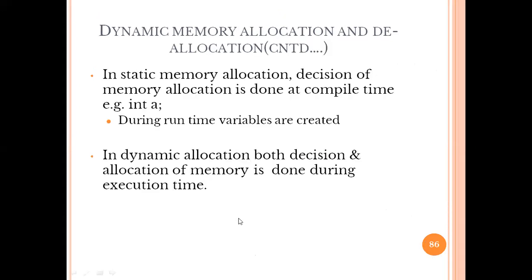In static memory allocation, the decision of memory allocation is done at compile time. For example, 'integer a' — the variable is created at compile time. In case of dynamic allocation, both the decision and allocation of memory are done during execution time only. For instance, a movie may have no tickets reserved for one Friday and all tickets reserved the next — this happens at execution time, which is why dynamic allocation handles it.